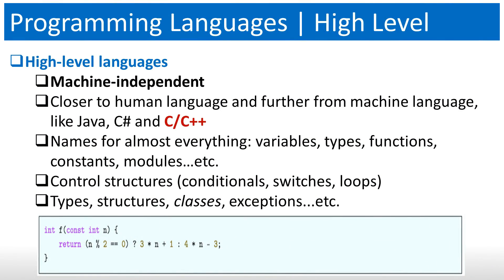The next type is called high-level languages. These are completely machine independent, closer to human language and further from machine language. Examples are Java, C#, C, and C++. They have names for almost everything: variable names, type names, functions, constants, etc. They also have control structures for conditional coding — you can compare things, loop and iterate, and define your own types and structures. Classes exist in object-oriented languages, but C specifically is not object-oriented and has no classes. Java, C#, and C++ are object-oriented. Exceptions are also another feature of these languages.